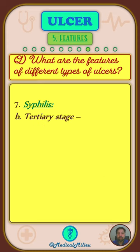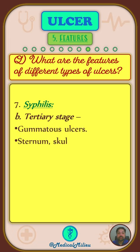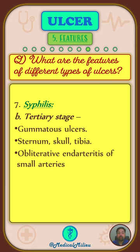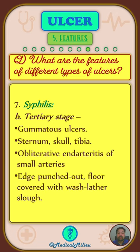The tertiary stage of syphilis is characterized by gummatous ulcers occurring over the sternum, skull, and tibia. There is obliterative endarteritis of the small arteries. The edge is punched out and the floor is covered with wash leather slough.